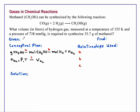We're given in this problem that we want to synthesize 35.7 g of methanol, CH3OH, at a temperature of 355 K and a pressure of 738 mmHg. We want to find the volume of hydrogen that is required.